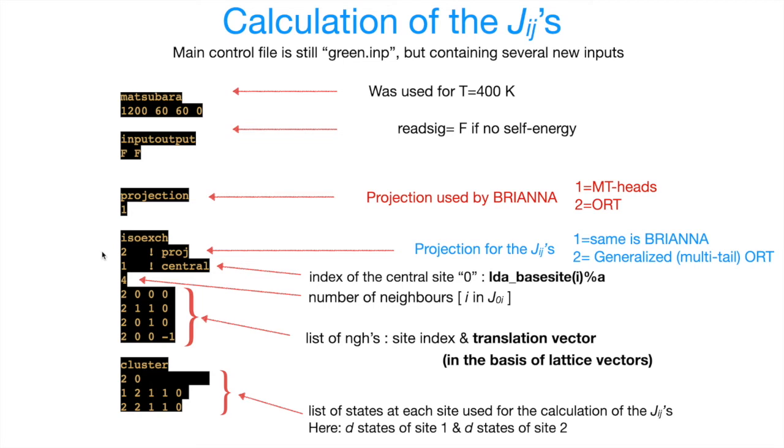And here we have two choices. Choice number one will use the same projection as Brianna uses, and Brianna uses projection one by default, which is Muffin-tin heads. For JIJs, we can also have another choice, which is called generalized ORT. And what it does, it basically does the Löwdin orthogonalization of the entire LMTO basis. And we can only use this projection for the JIJs, but not for DMFT part, because when we calculate the JIJs, there is no requirement to have a single L representation of our orbitals.